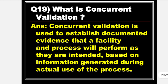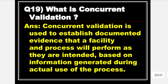Next is: What is Concurrent Validation? Answer: Concurrent Validation is used to establish documented evidence that a facility and process will perform as they are intended, based on information generated during actual use of the process.